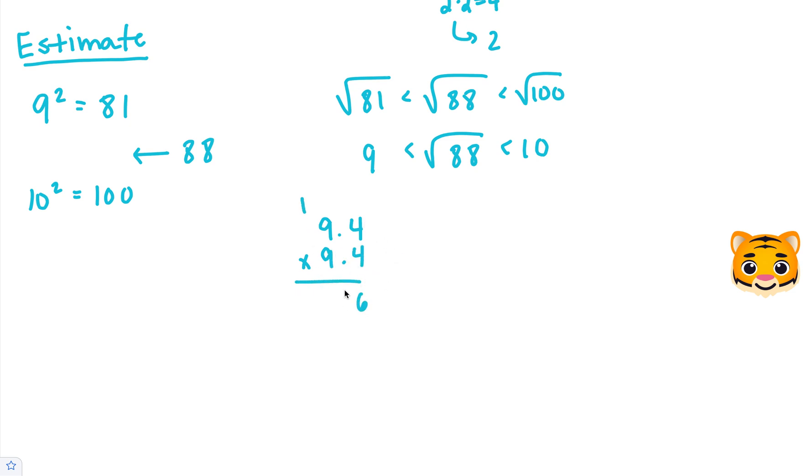4 times 4 is 16, carry the 1. 9 times 4 is 36, plus 1 is 37. Now we'll add a 0. 9 times 4 is 36, carry the 3. Then 9 times 9 is 81, plus 3 is 84.